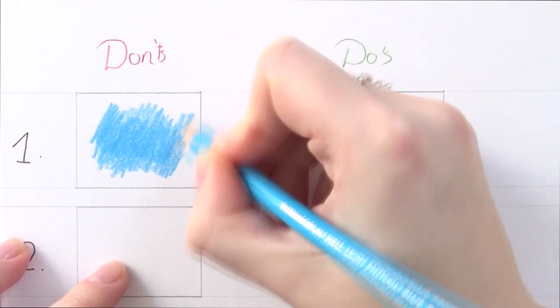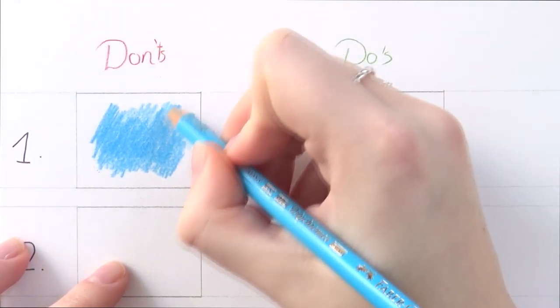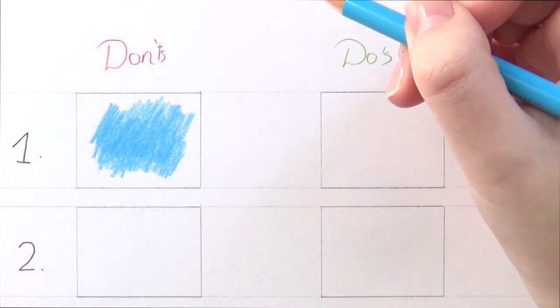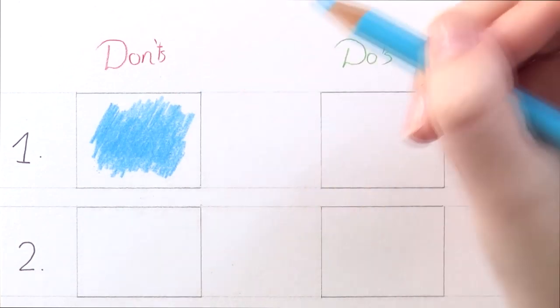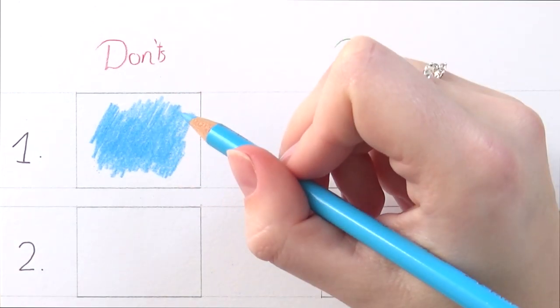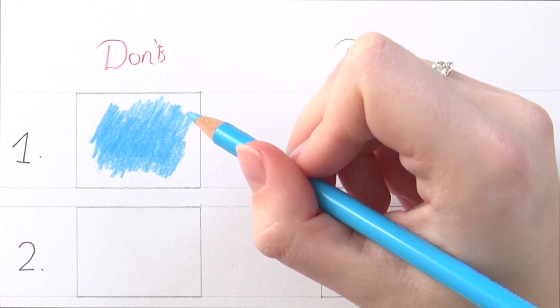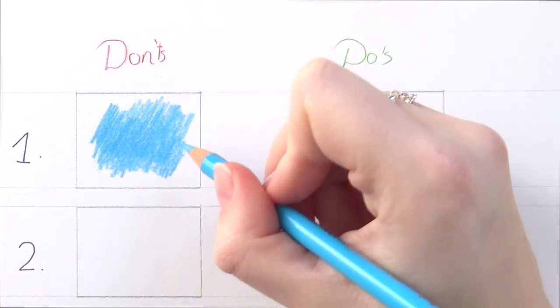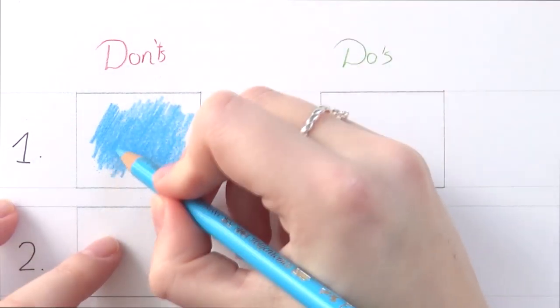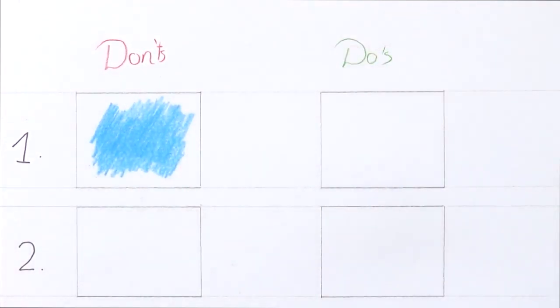So layering like this with a very heavy hand is okay if you're doing like coloring books and you just want an area to be one color. So this is okay if you want to do that but if you want to create something realistic and add more colors on top this isn't really the way to go. So that's the first don't.